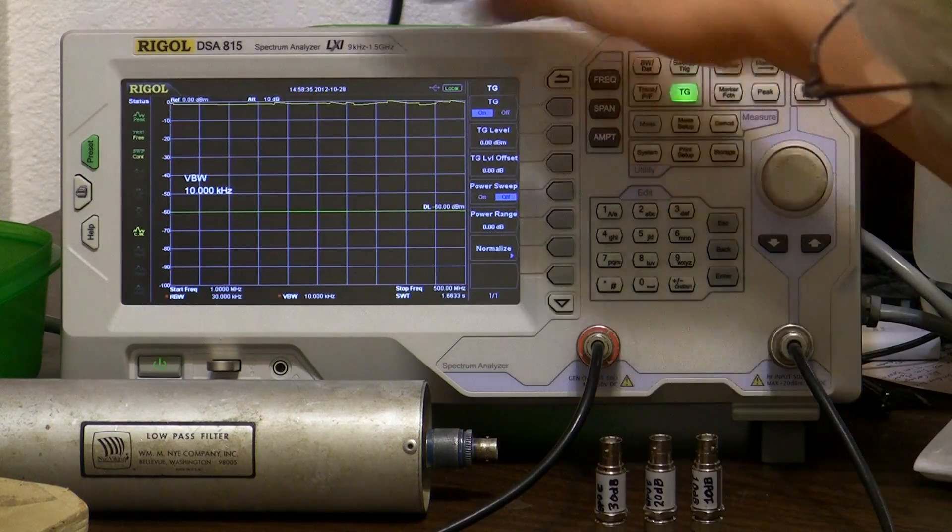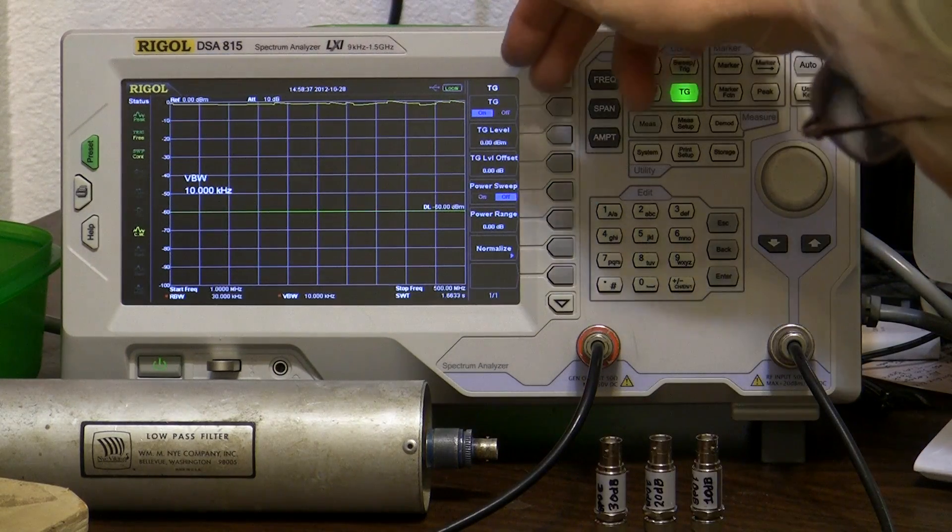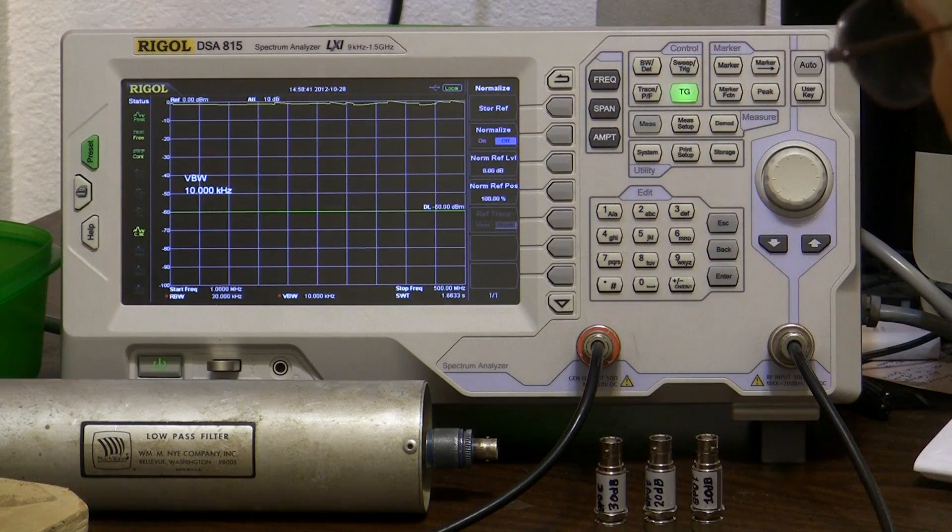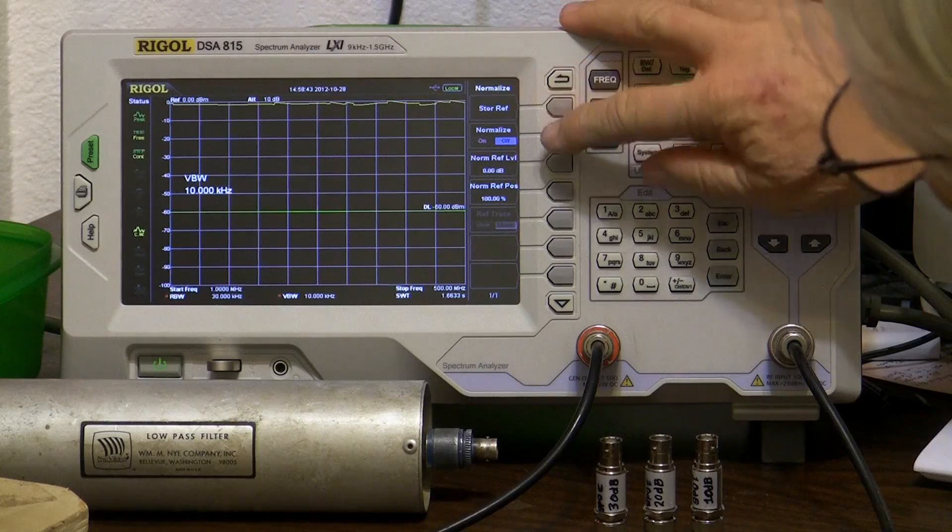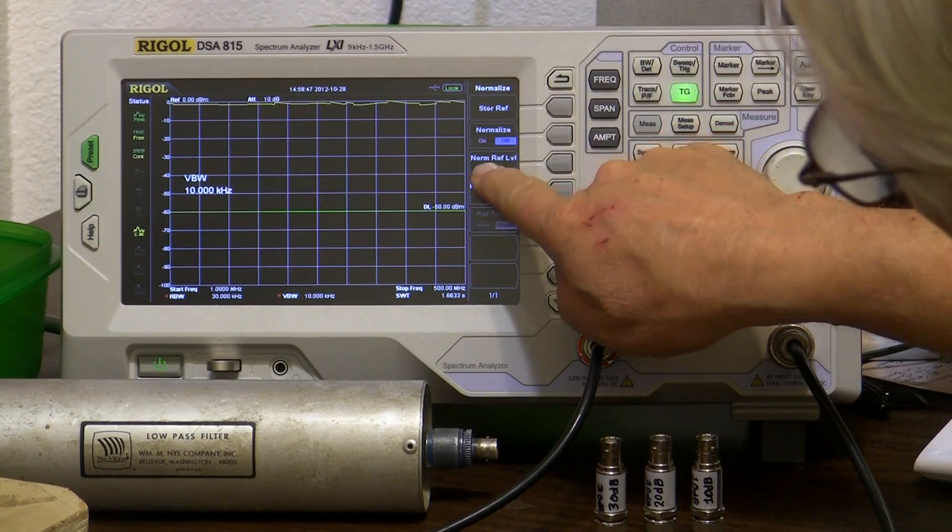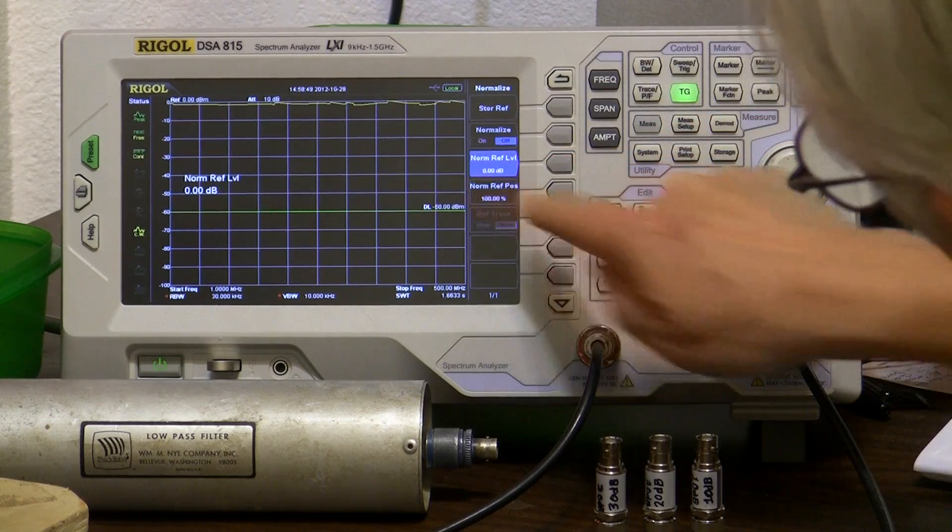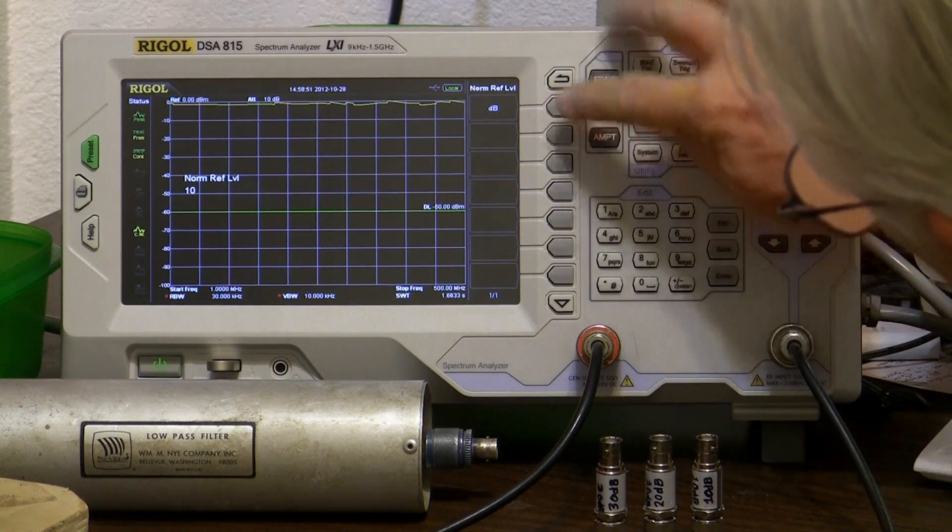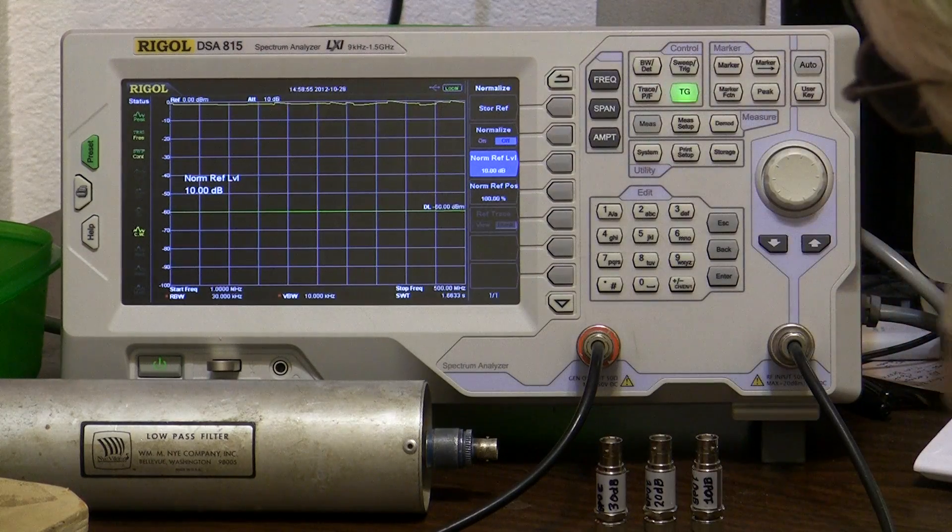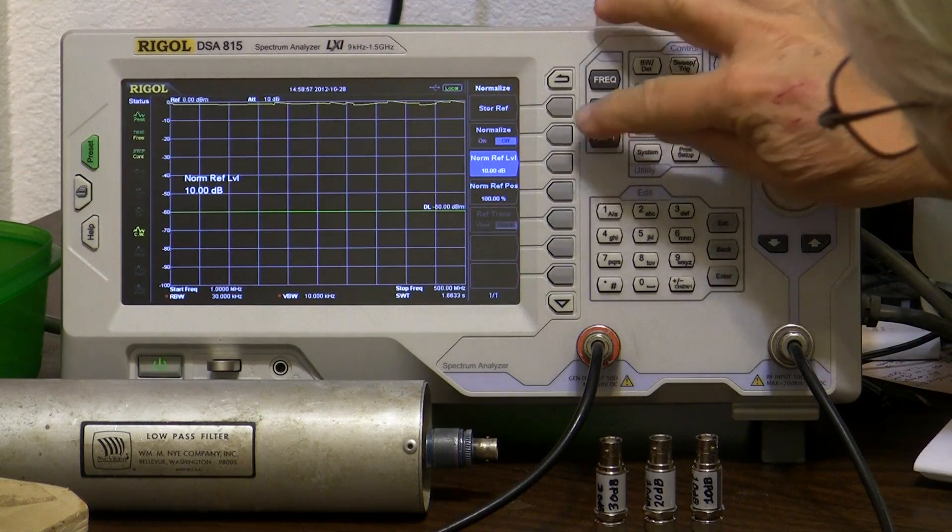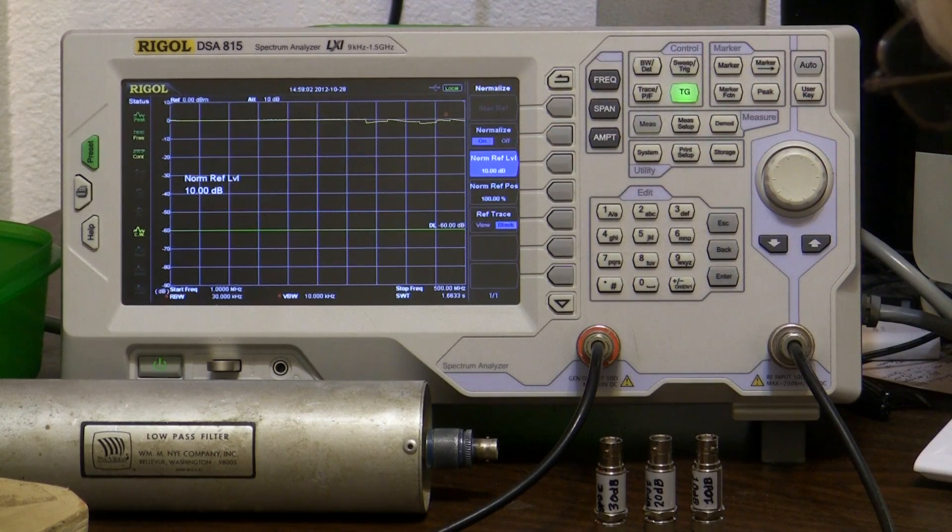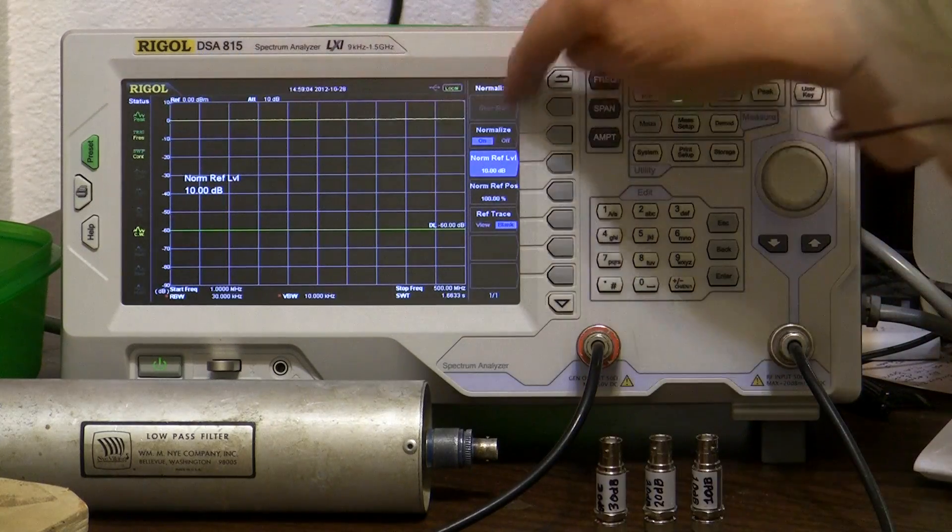Let's first get this into a normalized condition. We'll hit the normalize button here, which doesn't appear to do anything. It just presets it so that when I hit the normalize button, first I'm going to make the normalized reference level here 10 dB. That way it'll put it down here, and then we'll hit the normalize button.